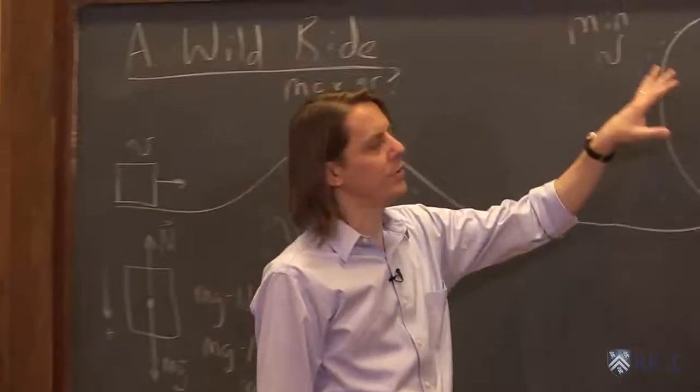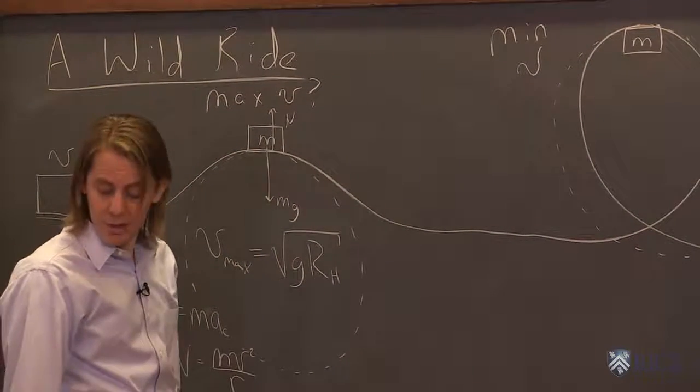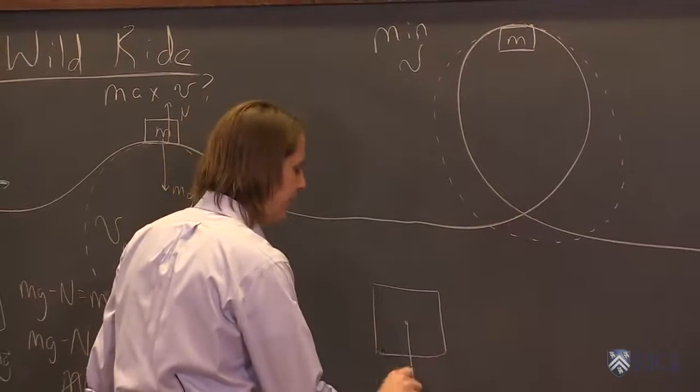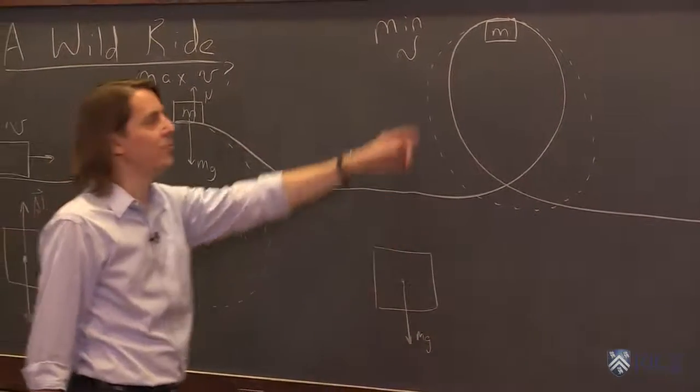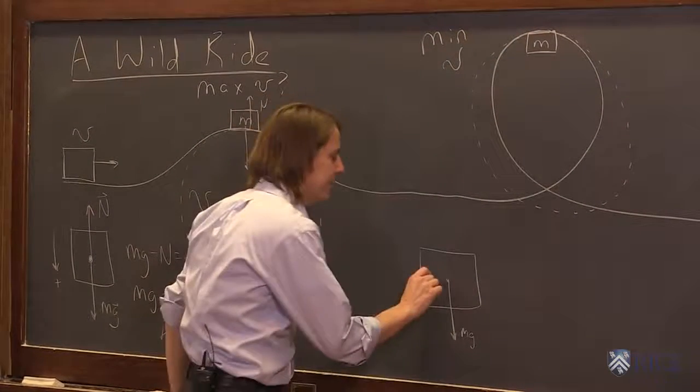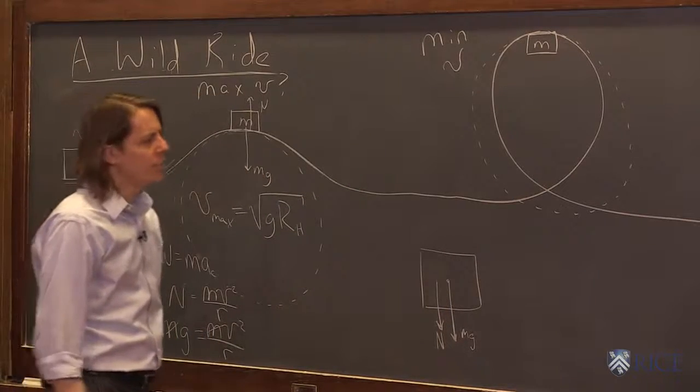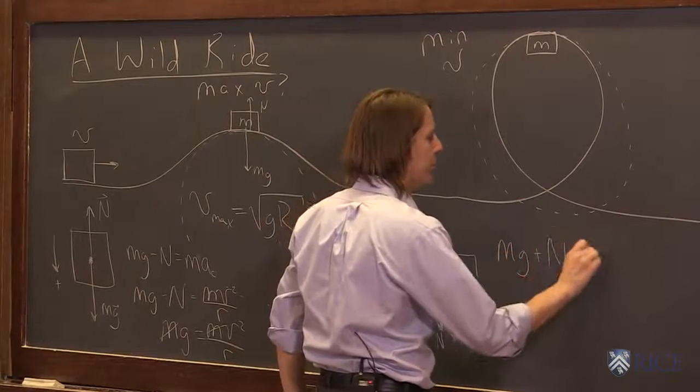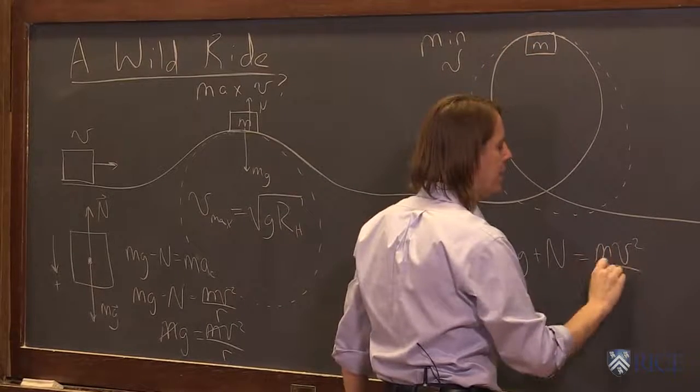Let's do a similar thought process here for the minimum speed it takes to stay on the loop. So in that case, free body diagram, you're going to have mg down. And in this case, the normal force is also going to be down. The normal force always pushes away from the surface. The surface is the track or the road. It can only push down. So you have mg down and you have normal force down. So if we write our Newton's second law, mg plus the normal force is m. In this case, we're also approximating circular motion. So I'll just go ahead and write mv squared over r.